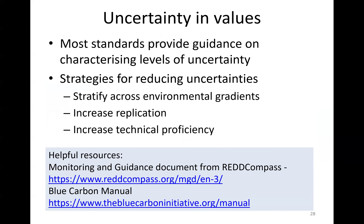Uncertainty is really important. Most standards provide guidance on characterizing levels of uncertainty and specify what is allowed — 90% confidence intervals are sometimes used. There are a couple of strategies for reducing uncertainty. The first is to stratify across environmental gradients — this is the best way to go about it. If you've got a big mangrove, split it into sections to reduce uncertainty by characterizing, say, the seaward fringing mangrove separately from the landward one. Increased replication and also increasing technical proficiency — making sure your measurements are good — are also key strategies.